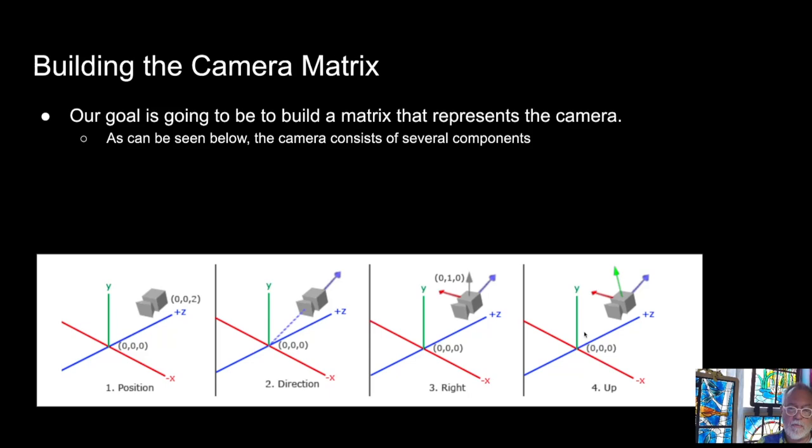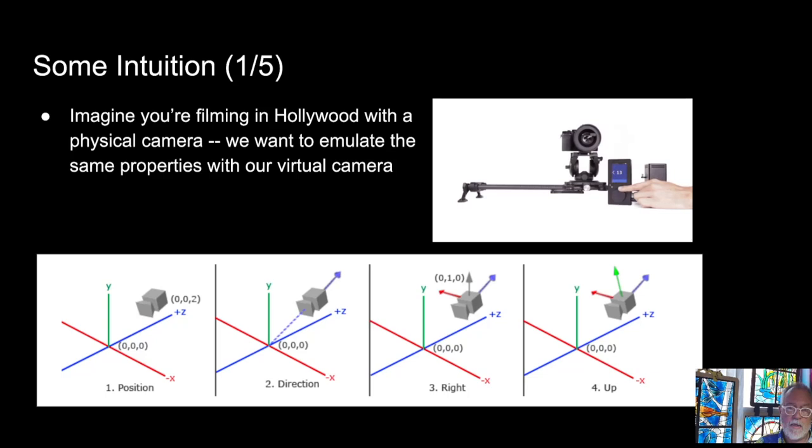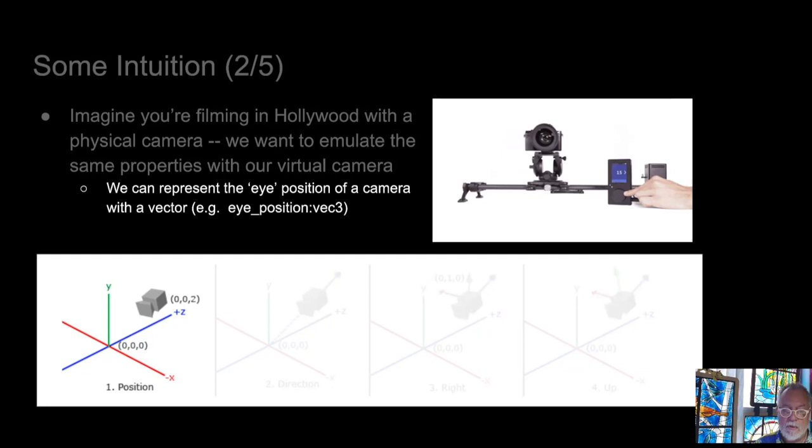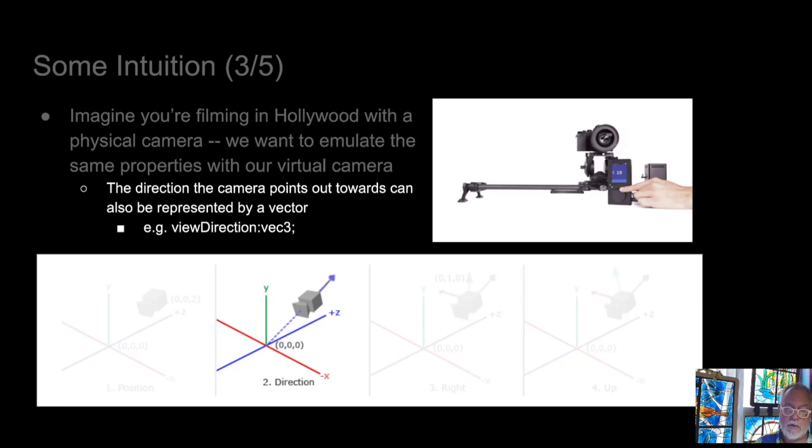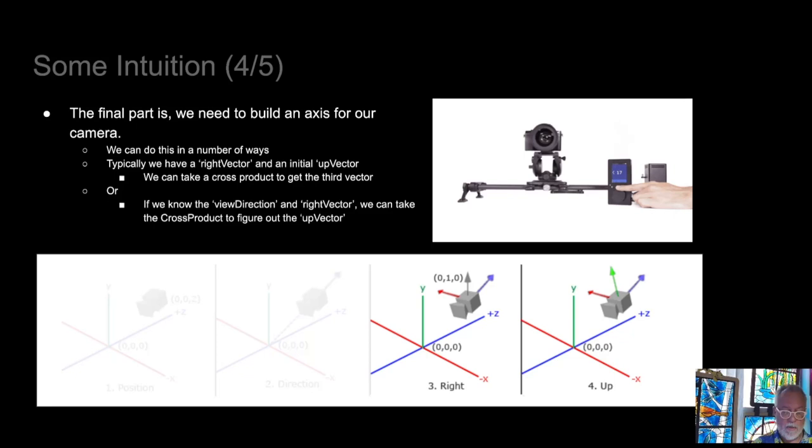So, we want to figure out how to build a matrix that represents this camera. In Hollywood, they talk about the role of the camera where you spin it around. You can look up, you can look down, and you can look left and right, and then you can go forward and backwards. So, the position is represented as the eye position. The direction is a view direction. You can either specify that as a view direction, or you can specify a point and compute the direction based on the subtraction of the look-at point from the eye, and then you have either a right or an up vector. You need one extra piece of data that indicates whether you're rotating up or down.